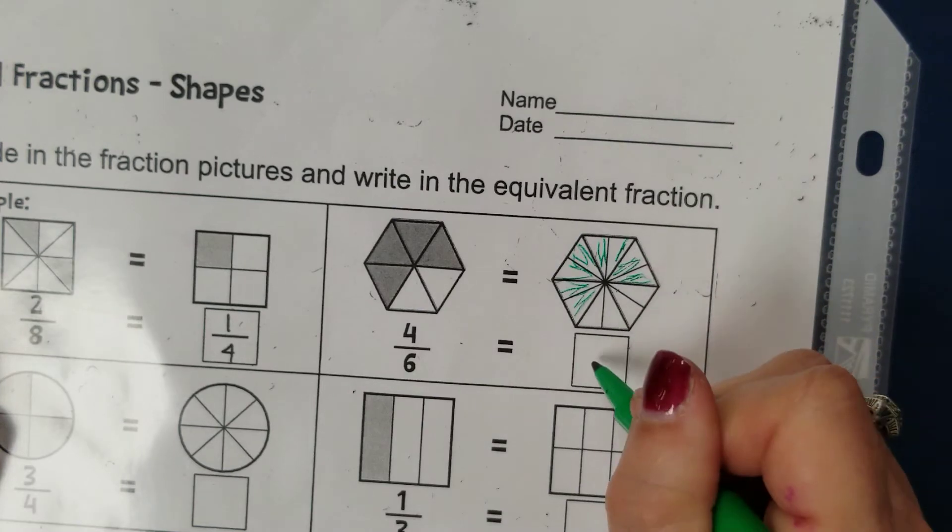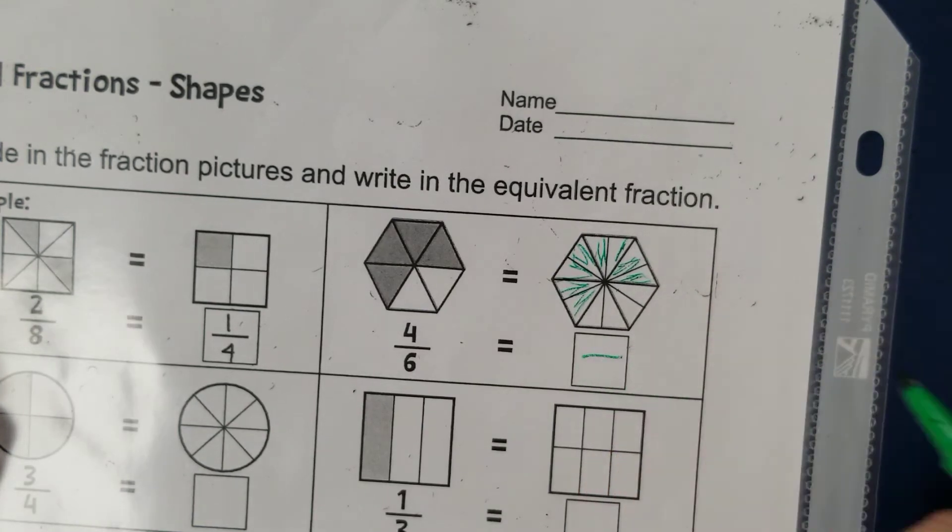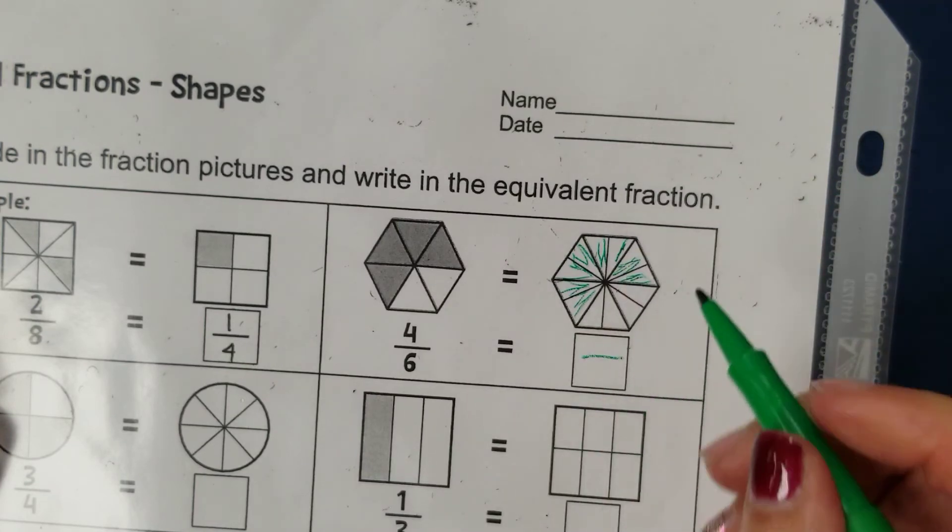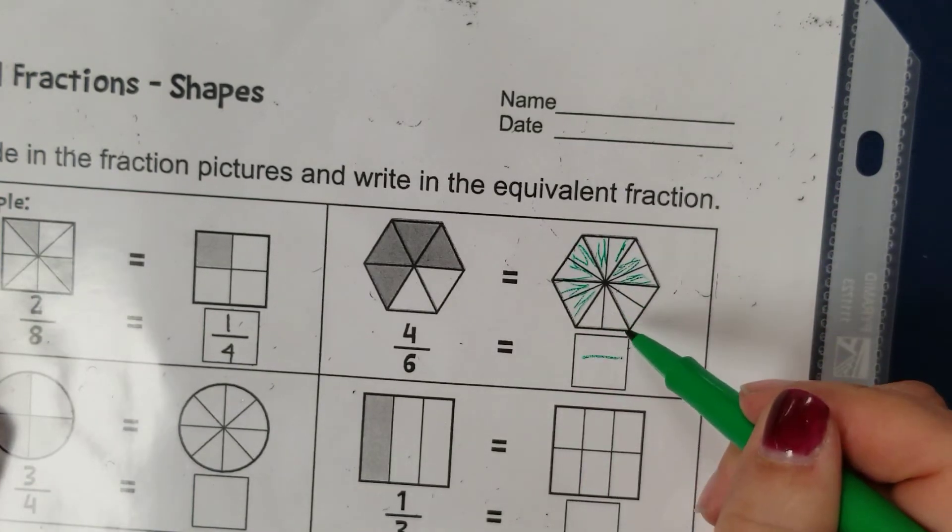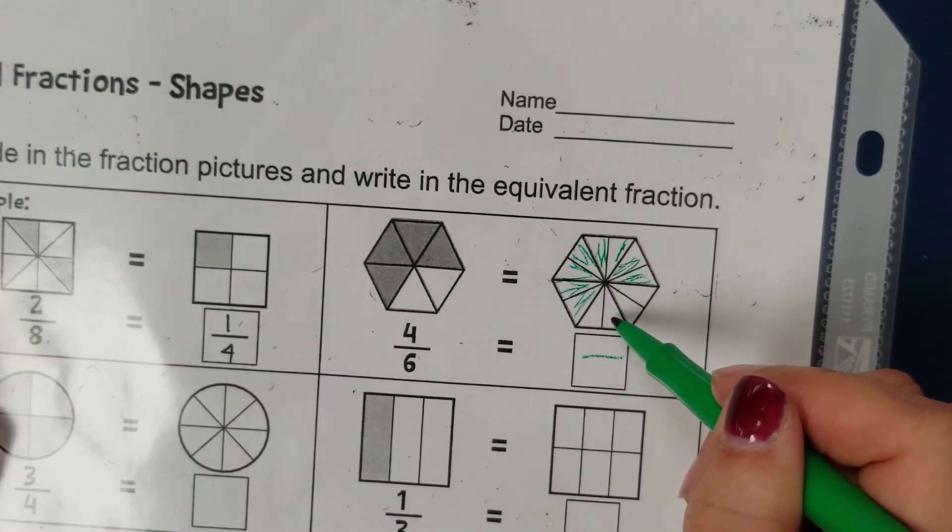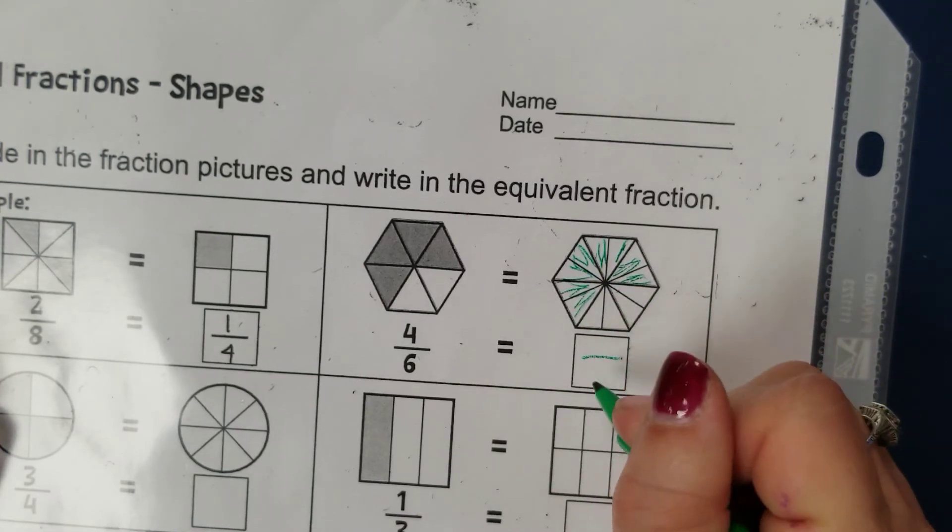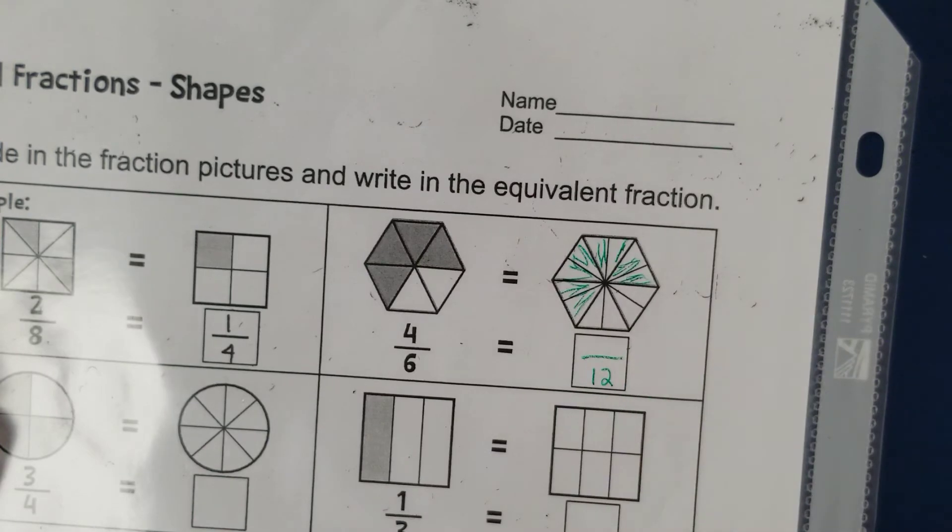So if I were looking at this shape I first want to count how many parts there are total that it has been equally divided into and I have one, two, three, four, five, six, seven, eight, nine, ten, eleven, twelve total parts.